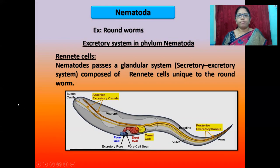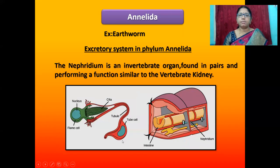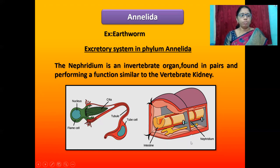The next phylum is Nematoda. The example organism is roundworm. The excretory system in phylum Nematoda uses renette cells. Nematodes possess a glandular system composed of renette cells unique to the roundworm, with water passing throughout the excretory pore. The next phylum is Annelida. The example organism is earthworm. The excretory structure in Annelida is the nephridium — an invertebrate organ performing a function similar to the vertebrate kidney. The body is organized in segments, and the nephrostome collects waste and passes it out through the nephridiopore.